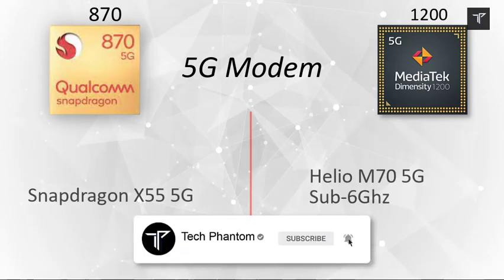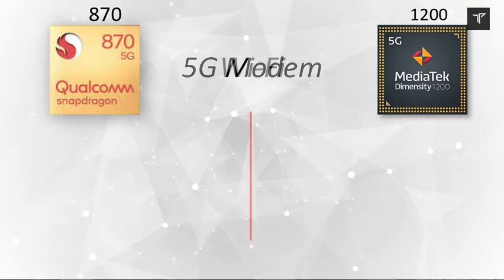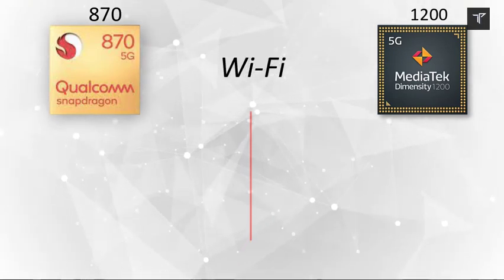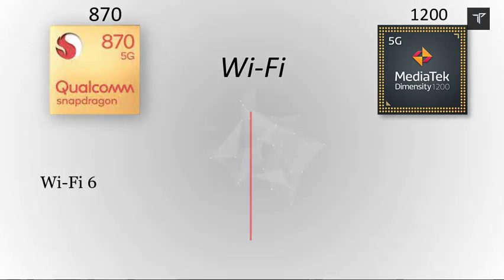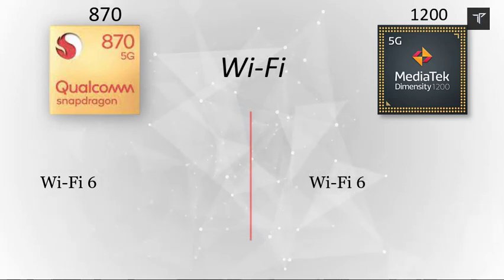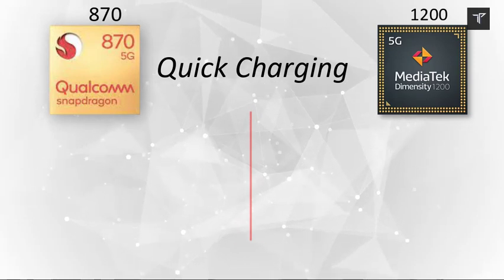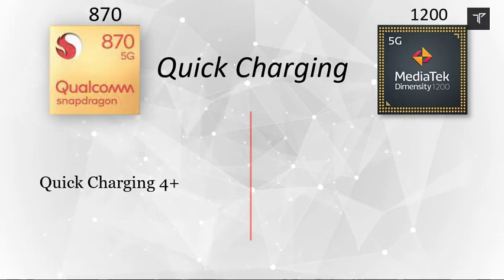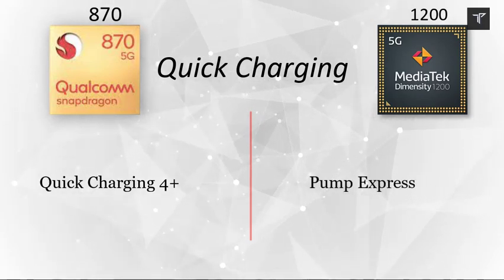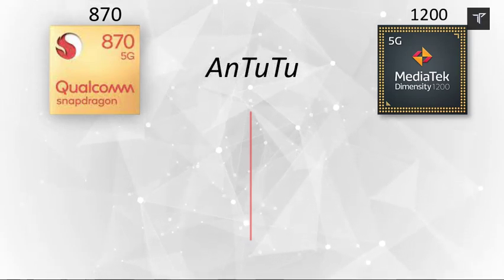Both chipsets support 5G — the Qualcomm uses the Snapdragon X55 modem whereas the MediaTek Dimensity has its own integrated approach. For Wi-Fi, both support Wi-Fi 6. On fast charging, the Qualcomm supports Quick Charge 4+ while the MediaTek has its Pump Express fast charging standard.